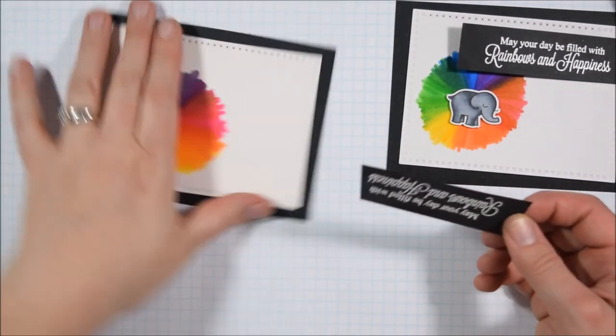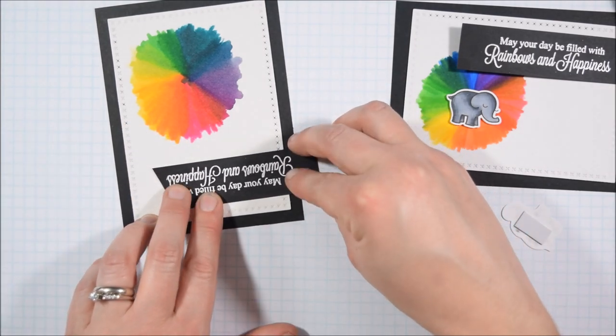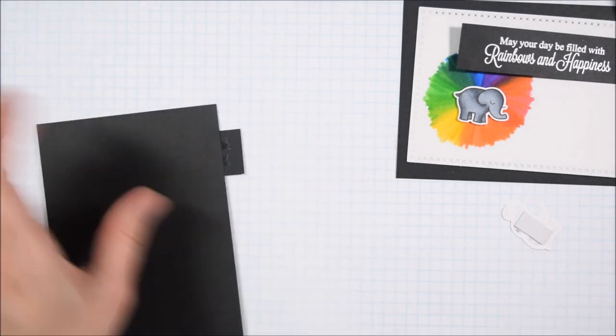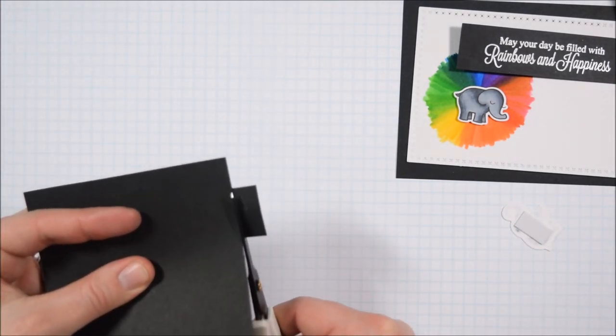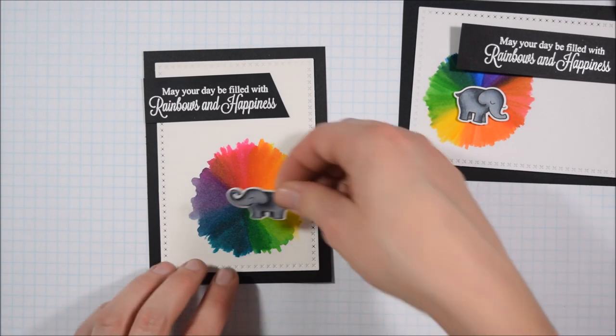But again, you could totally do this. To me, it's just a quick idea for how to finish up and use up some of those images. Or if you need a quick card, you could totally do this because coloring one of those little tiny elephants from Lawn Fawn is a very quick coloring activity and you could make a bunch of cards.